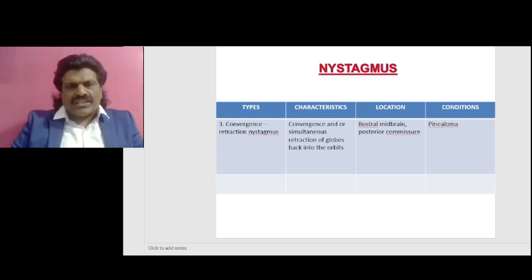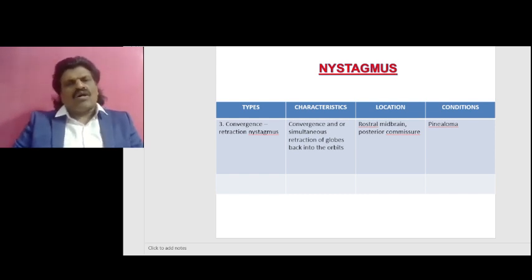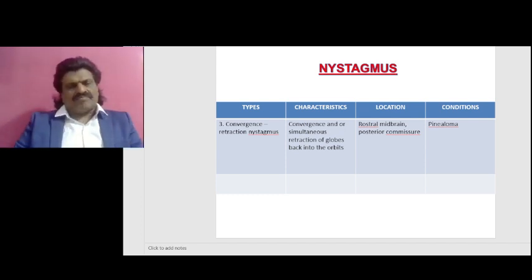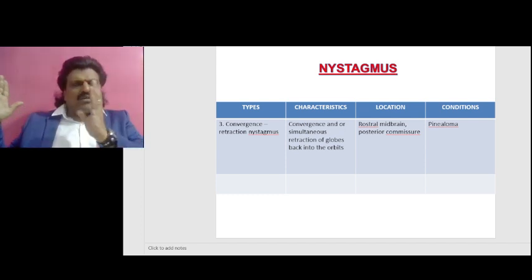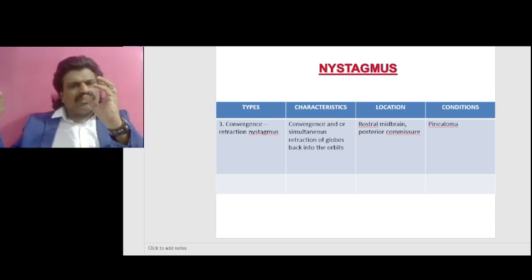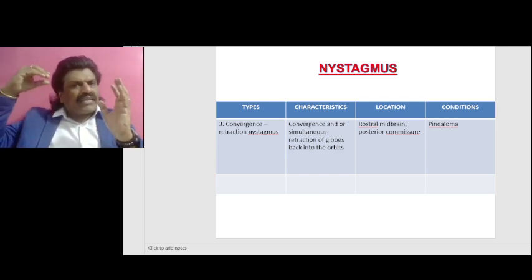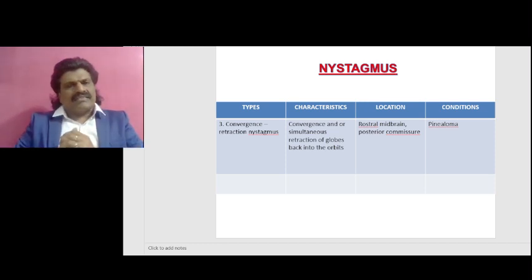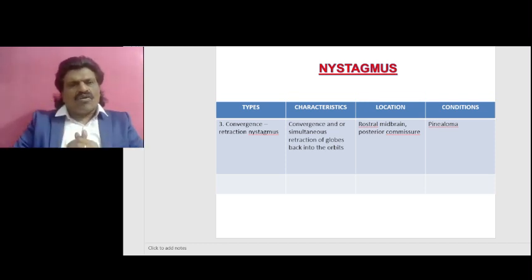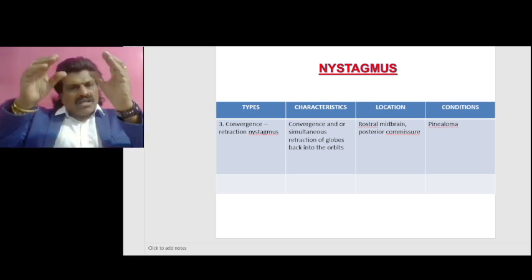This is Sherrington's law of reciprocal innervation. According to this law, when the agonist contracts, the antagonist has to relax. For example, to look to the right side, the right lateral rectus should contract and the right medial rectus should get inhibited, so the eye moves laterally to the right. According to Hering's law of equal and dual innervation, the yoke muscles get equal innervation.